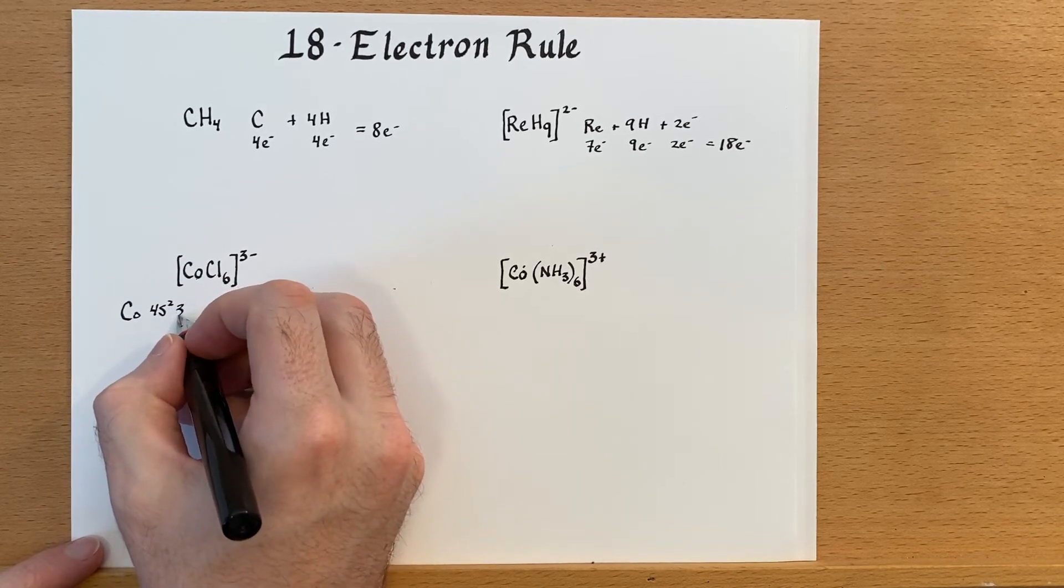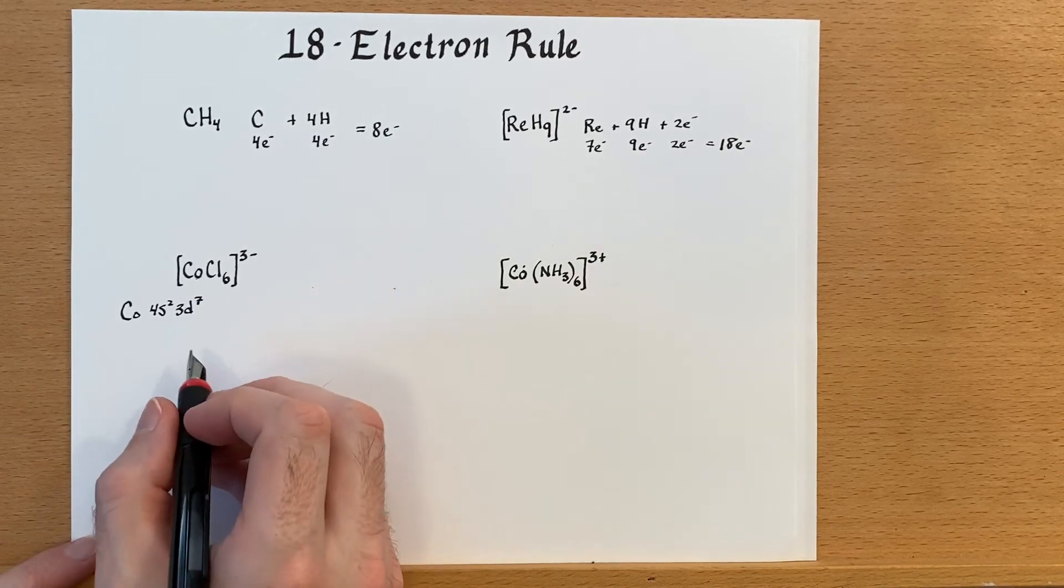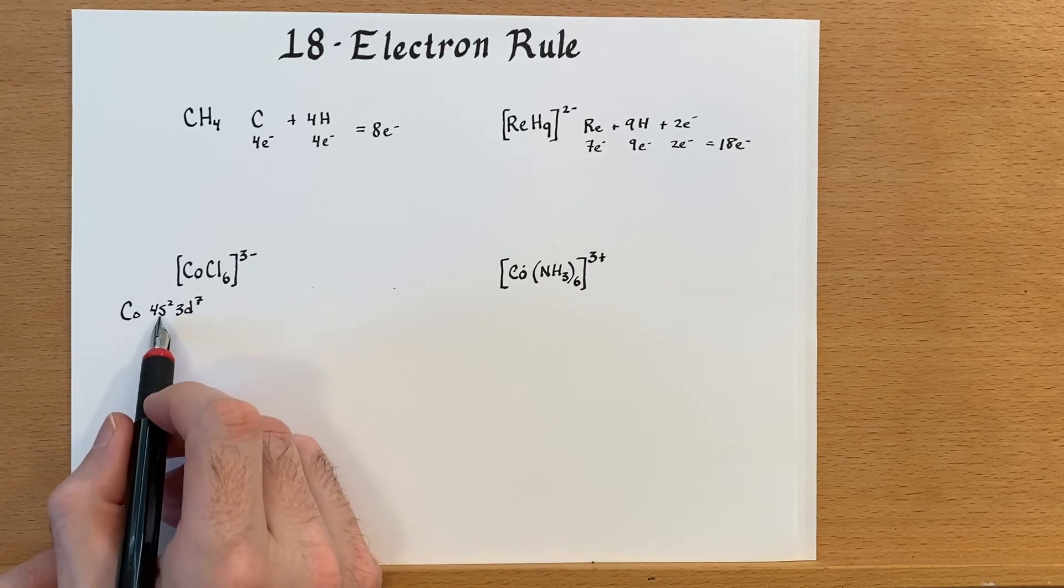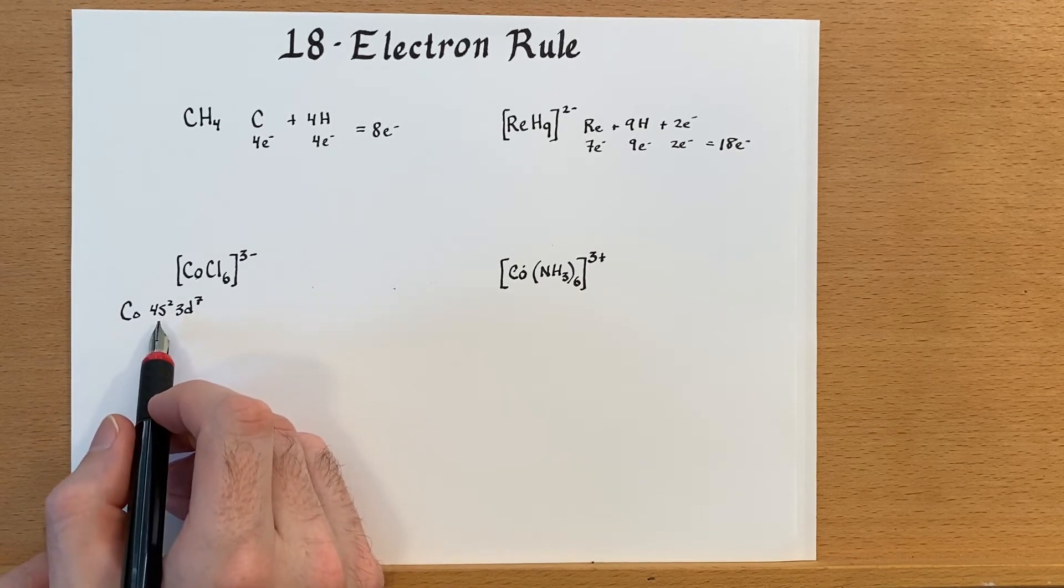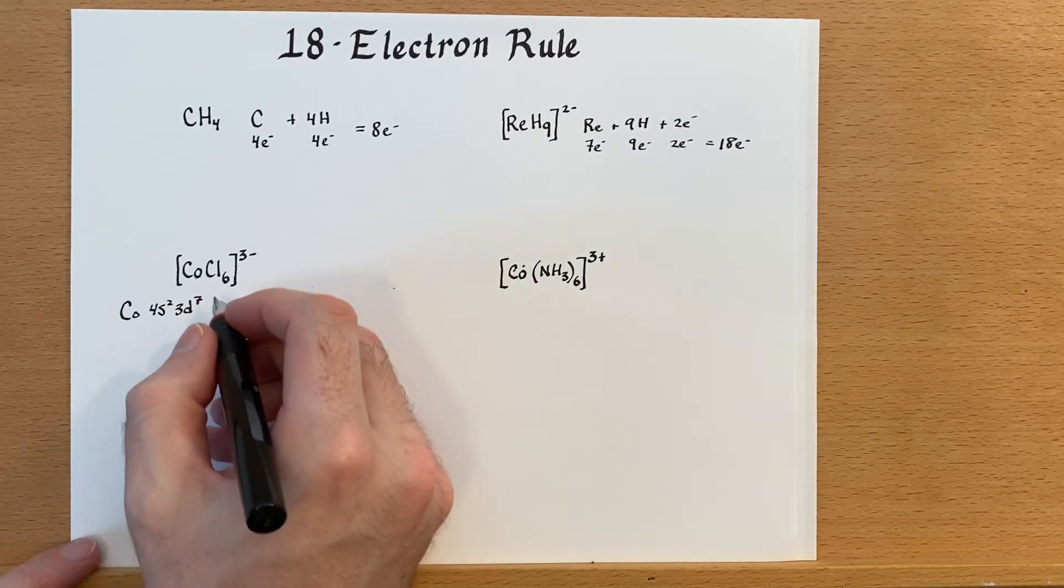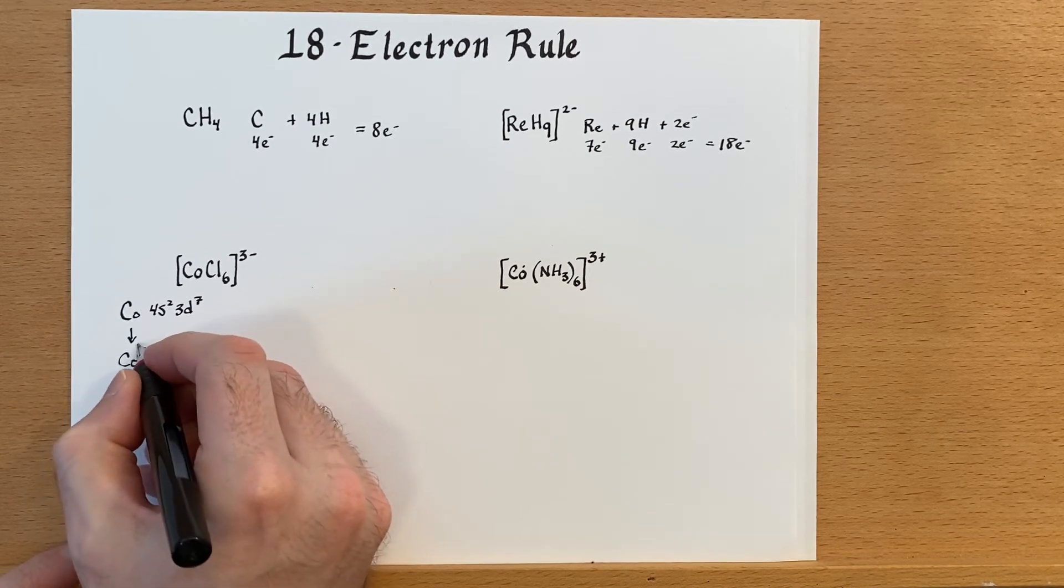Now, just as a quick review, if we have cobalt zero, no charge on it, that electron configuration is 4s² 3d⁷. So if we take away three electrons from that, there will be two electrons gone from the 4s because it's the outer shell, and we'll have to take one from the d orbital. So that will convert this cobalt 3 plus